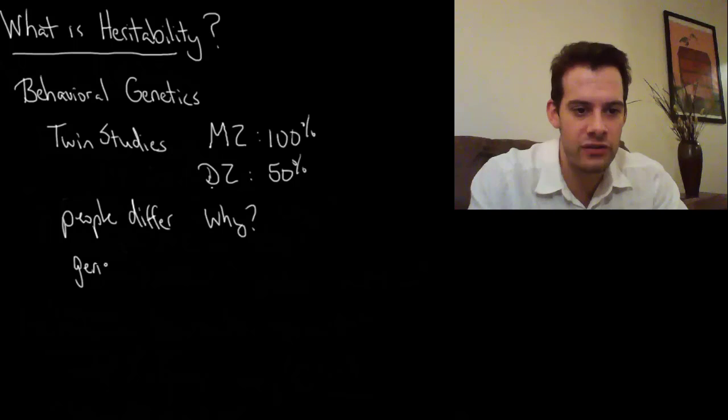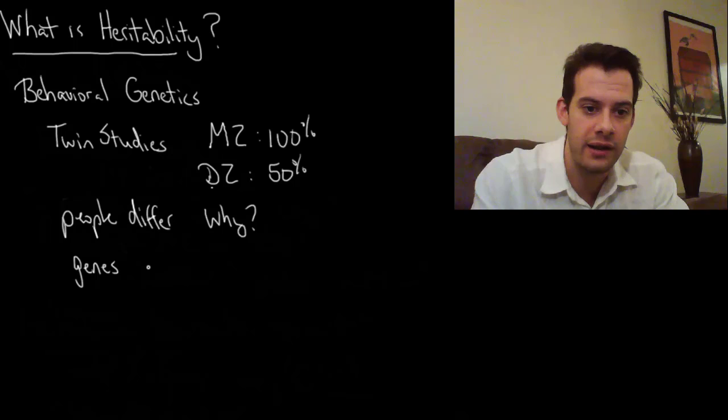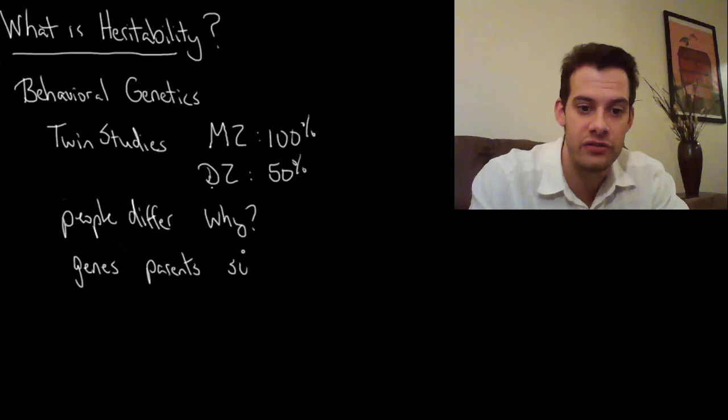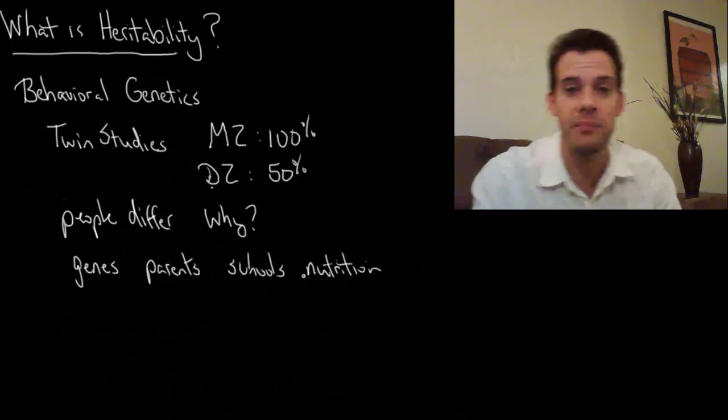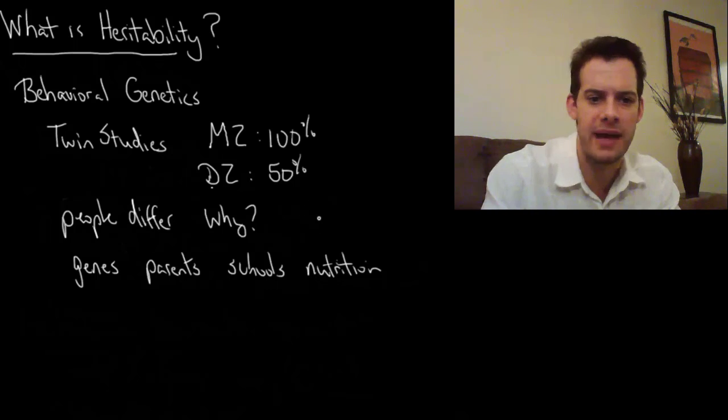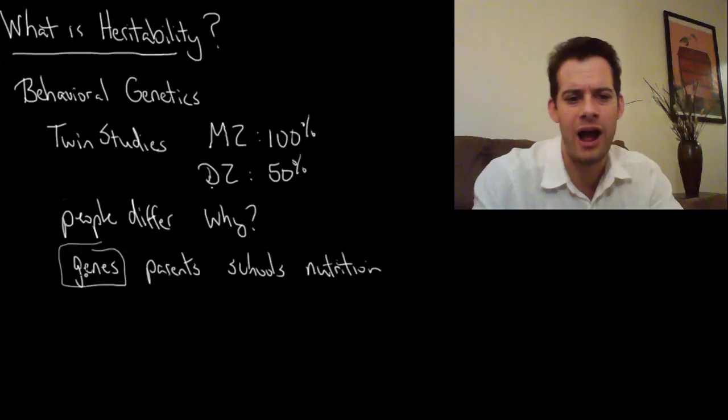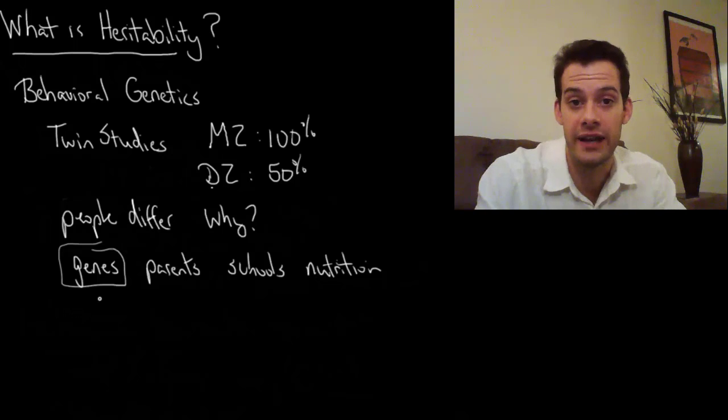And so the possible answers that we might have is people have different genes. That could be why they differ for a certain trait. People have different parents, people go to different schools, people have different levels of nutrition. There's a lot of possible answers but we can sort of roughly divide them up into genes and then environmental aspects. So if we want to know why do people differ, one of the possible answers is going to be genes. So we want to know how much do genes influence the differences in people, and this brings us to studying heritability.